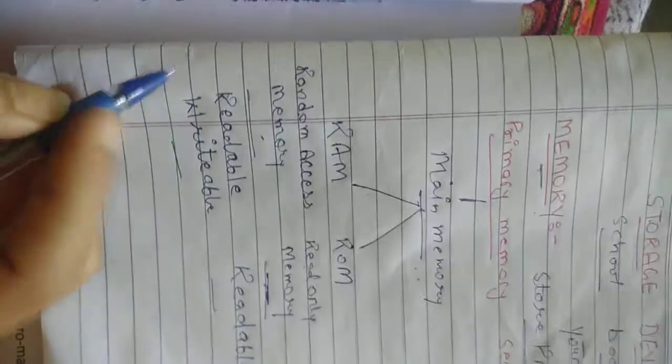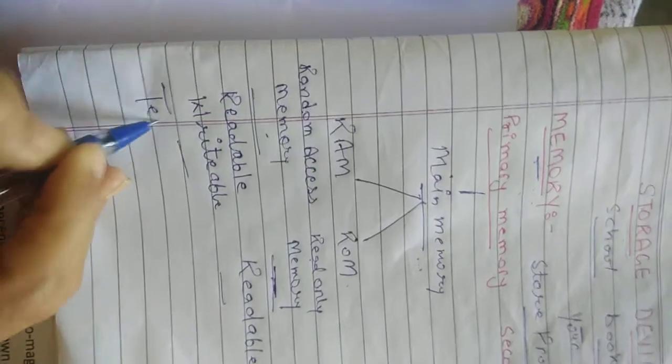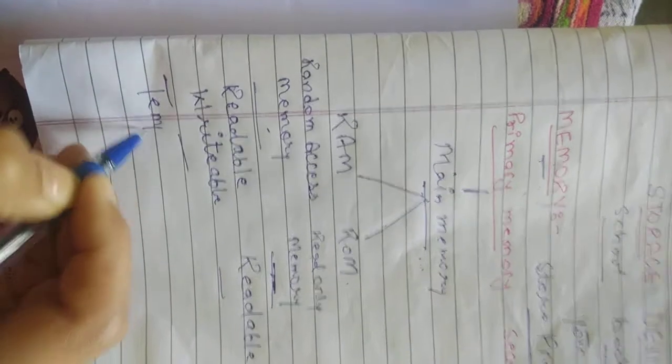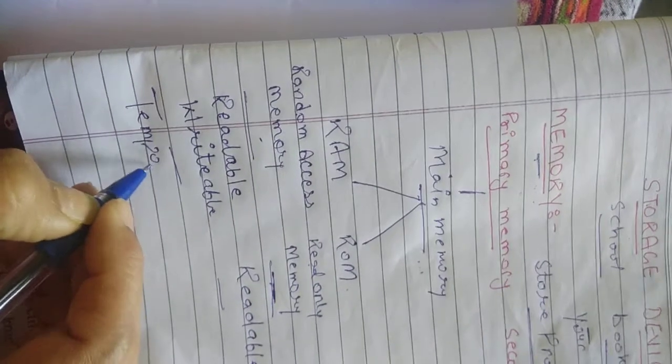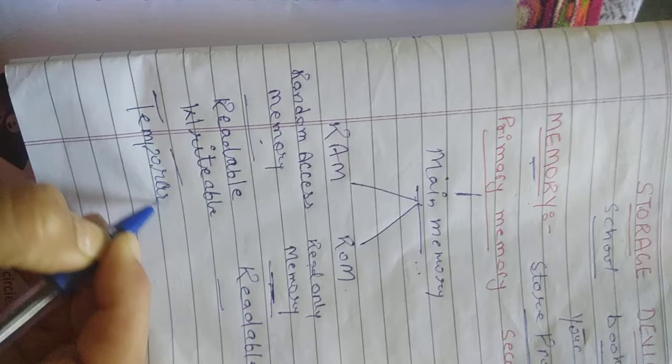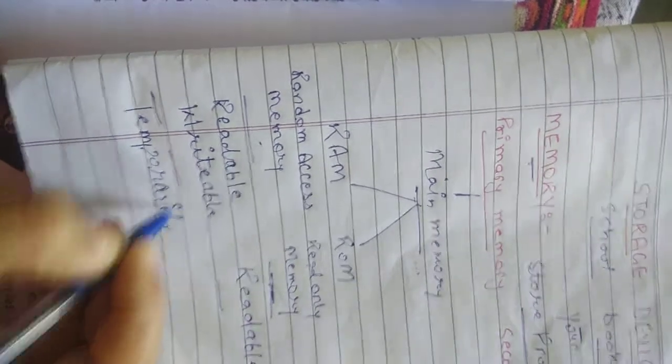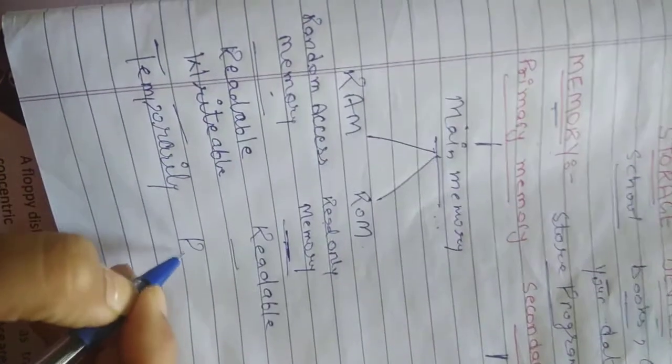RAM stores data temporarily. But ROM stores data permanently.